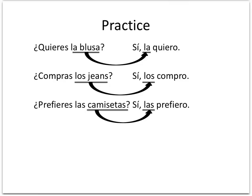Let's do a little bit of practicing. ¿Quieres la blusa? Do you want the blouse? You don't say, 'Yes, I want the blouse' — that's too repetitive. You're going to say, 'Yes, I want it.' So: Sí, la quiero. We're going to put la in front of the conjugated verb quiero. Notice that in the question I'm using the tú form of the verb, but when you answer, you change the verb form to the yo form: I want it.